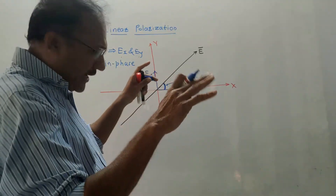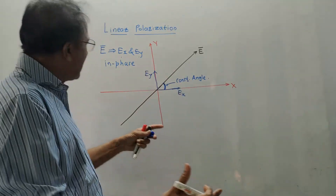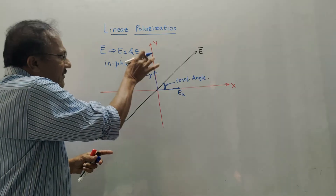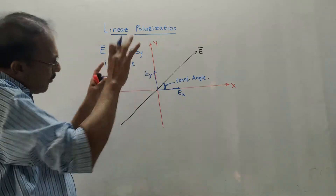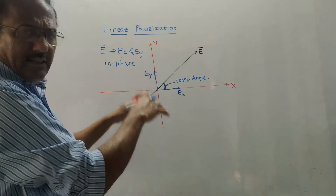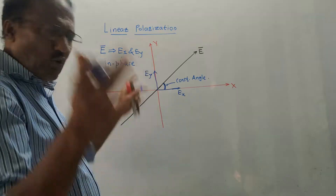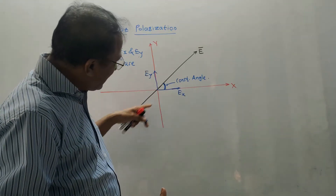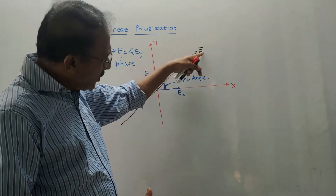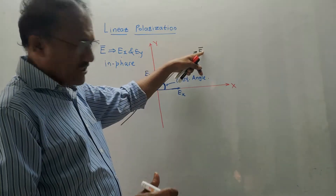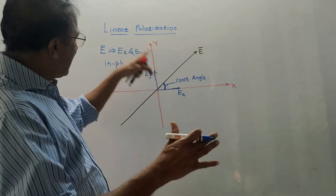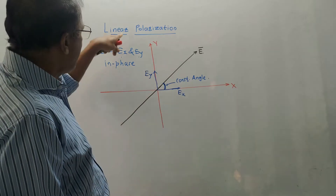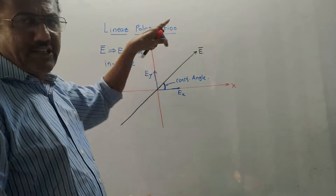Such type of polarization is known as linear polarization. Linear polarization can also occur if only E_X is present or only E_Y component is present. In both cases, linear polarization takes place. In simplified language, if the resultant direction remains the same — because E_X and E_Y are in phase — then such polarization is known as linear polarization.